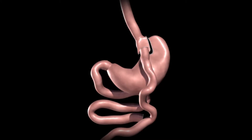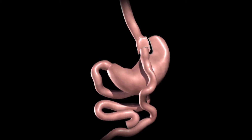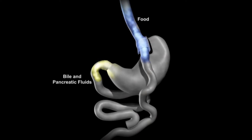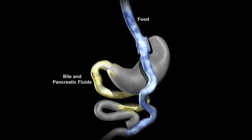Bypassing a portion of the small intestine decreases the absorption of calories and nutrients. The upper portion of the small intestine is reconnected to the lower portion of the intestine. The bile and pancreatic fluids from the liver and pancreas allow food to be completely digested.